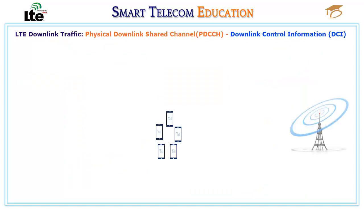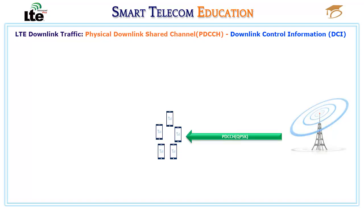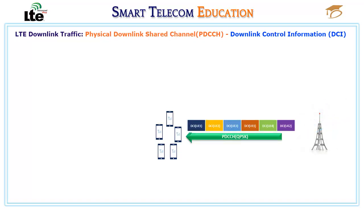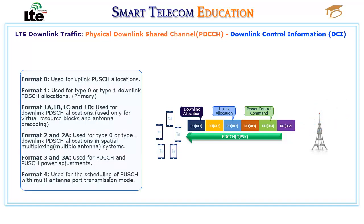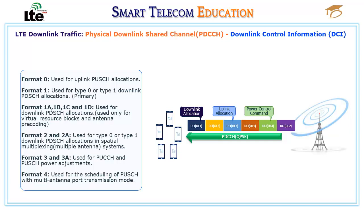In order for the UE to find and decode its data on the PDSCH, the UE must read the PDCCH, which contains DCI blocks that provide uplink allocation, downlink allocation, and power commands for specific UEs. The DCI formats are: Format 0, used for uplink PUSCH allocations; Format 1, used for type 0 or type 1 downlink PDSCH allocations.